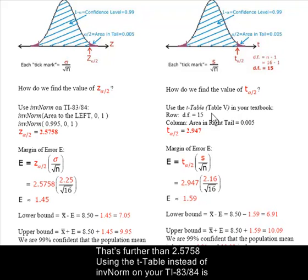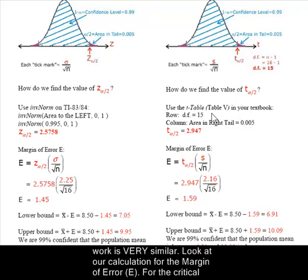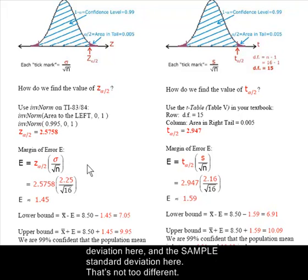Using the T table instead of inverse norm on your TI-83/84 is the only part that really feels different. As you will see in our side-by-side comparison, the rest of the work is very similar. Look at our calculation for the margin of error E. For the critical value, we use a Z score here and a T score here. We use the population standard deviation here and the sample standard deviation here. That's not too different.